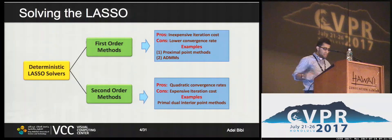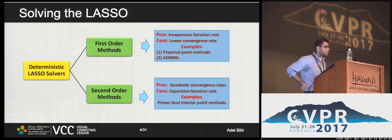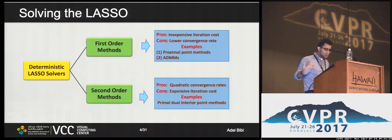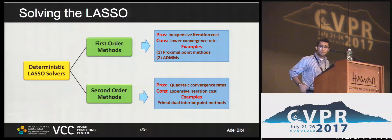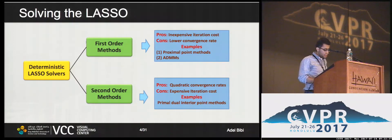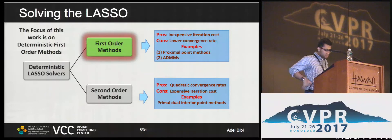In general, the deterministic lasso solvers are either first-order or second-order methods. I emphasize deterministic solvers to highlight that there exist some randomized methods to solve large-scale linear systems — there has been a direction towards solving the lasso this way, however this is not the focus of this work. First-order deterministic solvers enjoy inexpensive iteration costs with linear rates; proximal point methods and ADMM are good examples. Second-order methods require computing the Hessian or a proxy version, so they have high iteration costs but enjoy quadratic rates, with primal-dual interior point methods as an example. The focus of this talk will be on deterministic first-order methods.